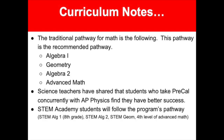The following pathway is recommended by our math department and district: Algebra 1, then Geometry, then Algebra 2, then Advanced Math. Students still have the option to select Algebra 2 after completing Algebra 1 and then taking Geometry. However, our science teachers have shared that students who take pre-calculus concurrently with AP Physics tend to have better success. STEM Academy students will follow the STEM Academy's program pathway: STEM Algebra 1 in 8th grade, STEM Algebra 2, then STEM Geometry in 10th grade, and finally a fourth level of Advanced Math.